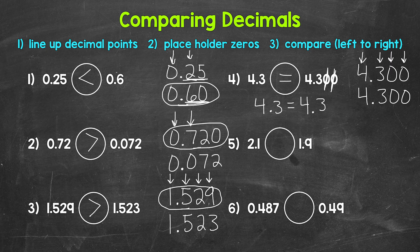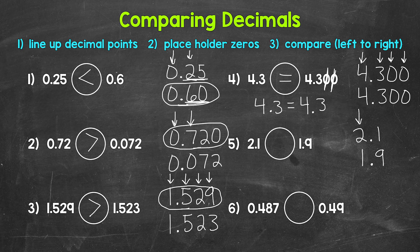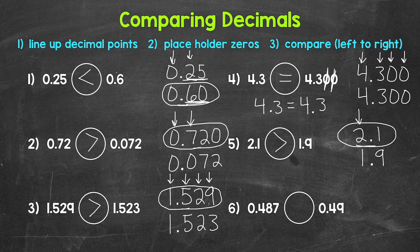Next, number five: comparing two and one tenth and one and nine tenths. Both go to the tenths place, so no placeholder zeros needed. Comparing left to right, we start with the ones place where we have a two and a one. Don't skip the whole numbers and go straight to the decimals — we do have a difference here. Two is greater than one, so two and one tenth is greater. Reading left to right: two and one tenth is greater than one and nine tenths.